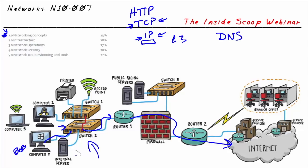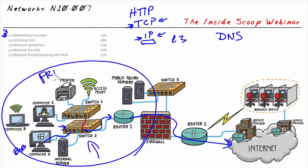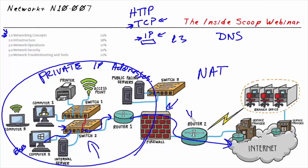One of the problems when Bob is trying to go out to the internet is that Bob's company is very likely using some private IP addresses. Private IP addresses are not routable over the internet. So, as part of our networking concepts, we'd want to understand the concept of network address translation, which would likely happen at the firewall or the router, and which swaps out Bob's private IP address with a routable address on the internet so that packet can be forwarded over the internet.